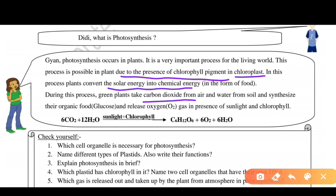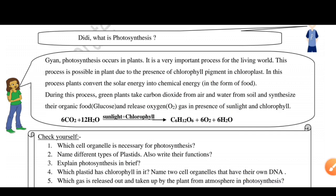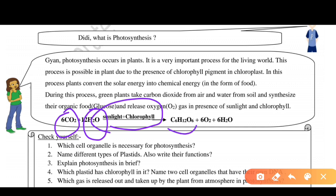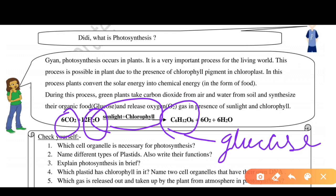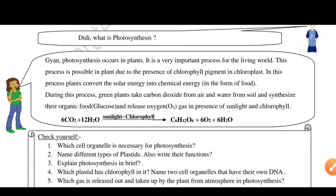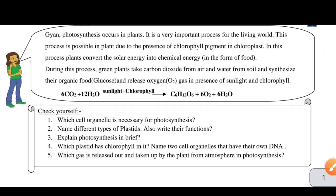Green plants take carbon dioxide from the air and water from the soil, and synthesize organic food — glucose — in the presence of sunlight and chlorophyll. The equation involves 6 molecules of CO2 and 12 molecules of H2O, in the presence of sunlight and chlorophyll, producing C6H12O6, which is glucose, along with oxygen and water released as by-products.